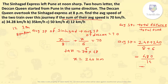So 480 divided by 14 gives approximately 34.28. As you can check from the options, the answer is A — 34.28 kilometers per hour. Just by using the basic formula of average speed you can solve this particular question.